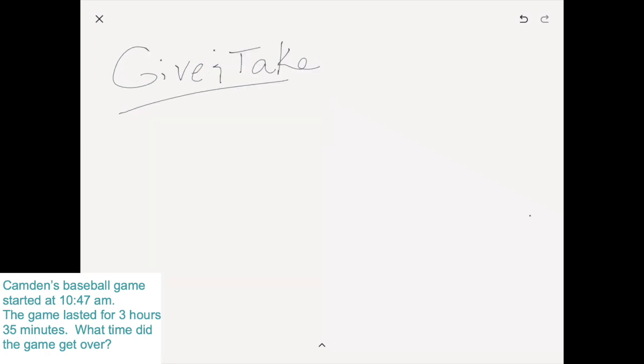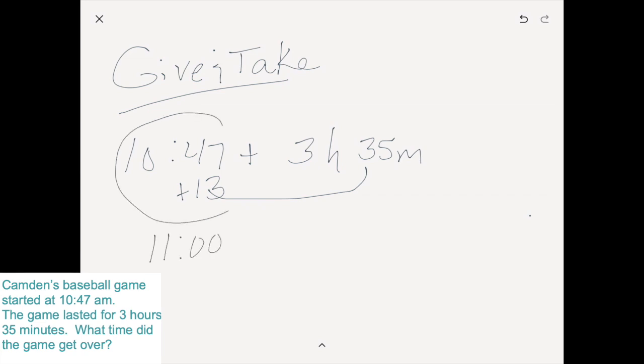Another popular strategy is the kids who want to do something with that 11. They're like, man, if it was 11 o'clock, that would have been so much easier to add and figure out. And so they will do the 10:47 plus the three hours and 35 minutes. But instead of just going ahead and rounding, they're going to take some from the 35 and give it to the 10:47 and say, okay, well, if 13 minutes passed, then we'd already be at 11 o'clock. So this together makes that 11 o'clock.